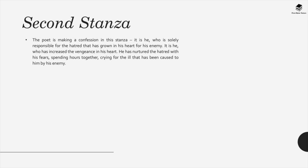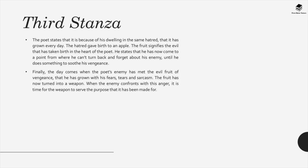In the second stanza, the narrator confesses that he is solely responsible for the hatred grown in his heart towards his enemy — he's nurtured this hatred with his fears, spending hours crying over the ill caused to him. In the third stanza, this dwelling hatred has given birth metaphorically to an apple, signifying the evil that has taken birth in the poet's heart, and he can't turn back until he soothes this vengeance.